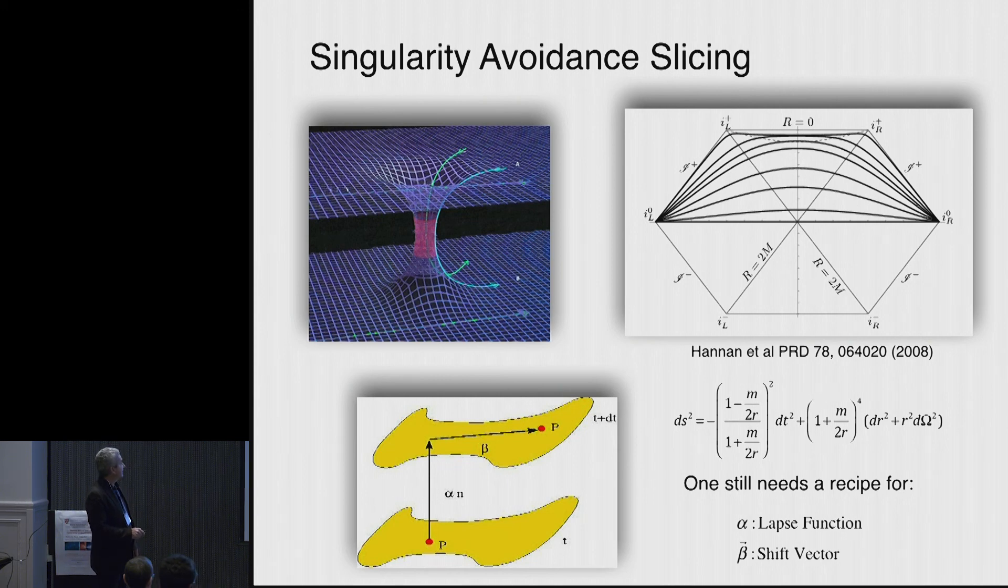that in the Kruskal, in the Penrose diagram looks like this. So you go from spatial infinity across the horizon to the other infinity. You can evolve black holes doing that.